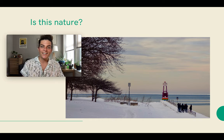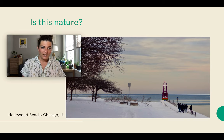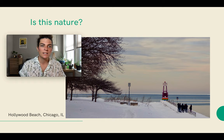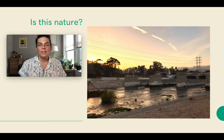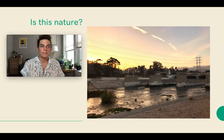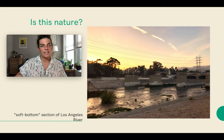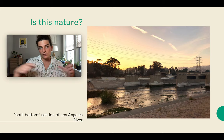Moving right along. I must admit, it's weird to do this talking to my computer in my office. But would you say that this is a depiction of nature? This is, of course, Hollywood Beach on the north side of Chicago — it's a very famous LGBTQ beach. Would you say that this is nature? Yes or no? This is the beautiful soft-bottom section of the Los Angeles River. The picture is taken from a running route along the top of the embankment. The embankments are concrete and the bottom is sand, dirt, mud, trees, plants, etc.